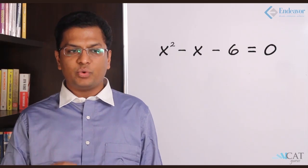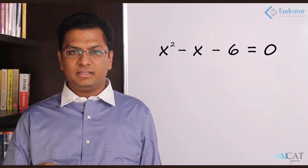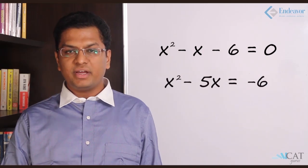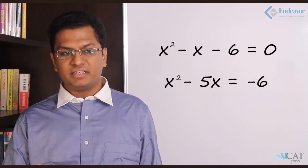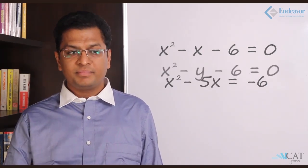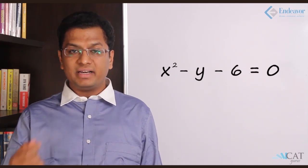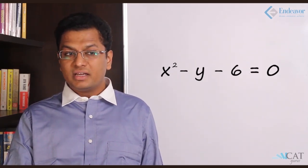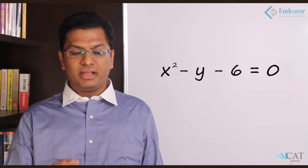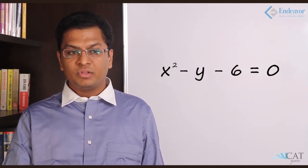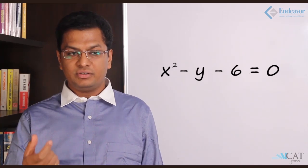Let us take a couple of examples. x² - x - 6 = 0, now that is a quadratic equation. x² - 5x = -6, this also is a quadratic equation. x² - y - 6 = 0, now this does not qualify — why? Because this has two variables, there is an x and there is a y, so this is not a quadratic equation.